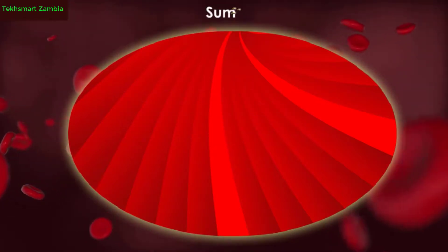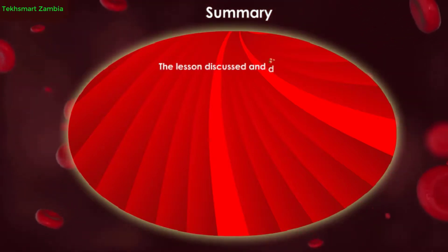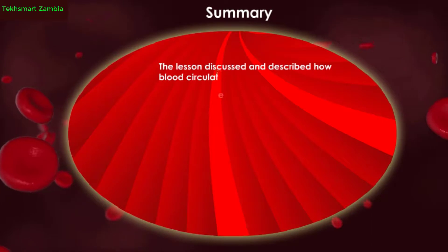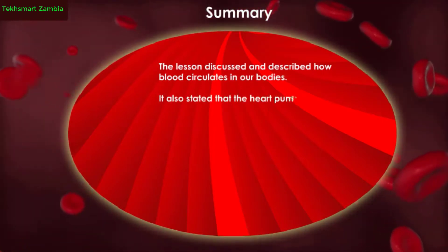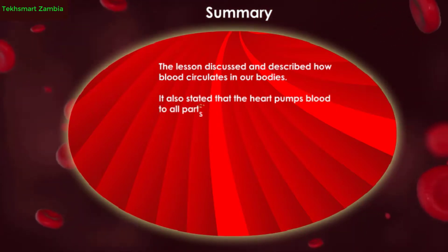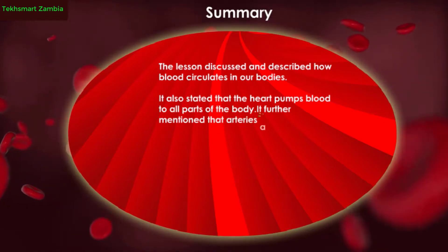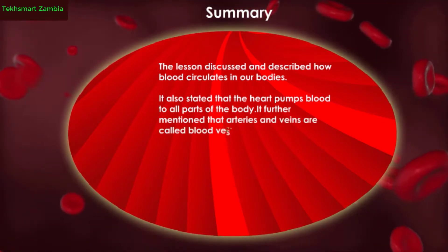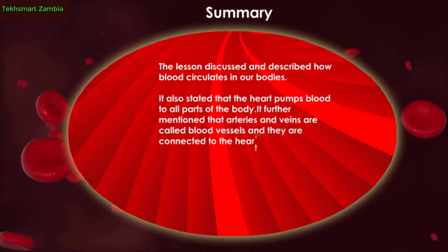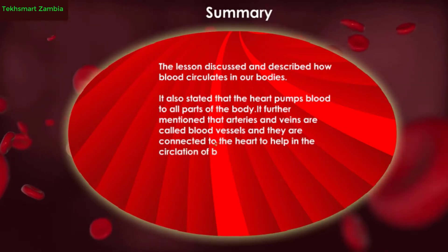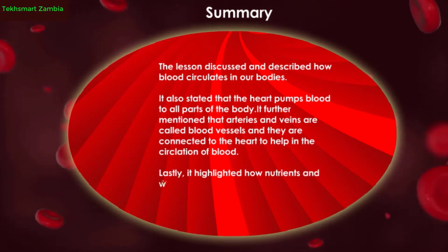Summary: The lesson discussed and described how blood circulates in our bodies. It stated that the heart pumps blood to all parts of the body, and that arteries and veins are called blood vessels, connected to the heart to help in the circulation of blood. Lastly, it highlighted how nutrients and waste products are transported through the blood.